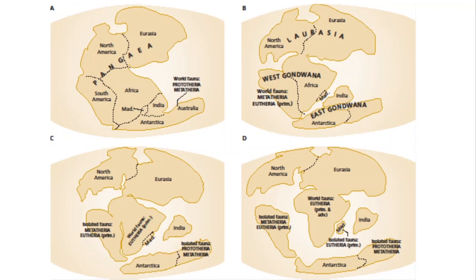Currently the distribution of the world's monotremes and marsupials is primarily in Australia, New Zealand, and New Guinea — the lower part of the globe. But it isn't at all clear that their origin is in that region. There are lots of marsupials in South America and we have one marsupial left in North America. Some of the oldest fossils we have are from North America, so it's not clear that marsupials and monotremes originated in Australia. Australian mammalogists are pretty adamant that they did originate there, but there's some regionalism going on there, which is to be expected.